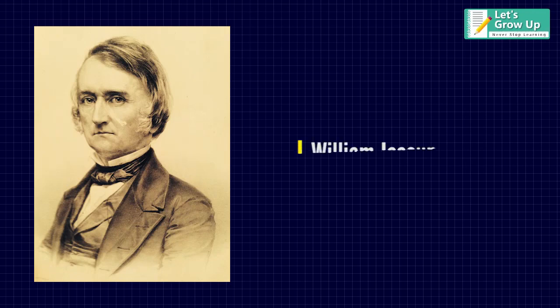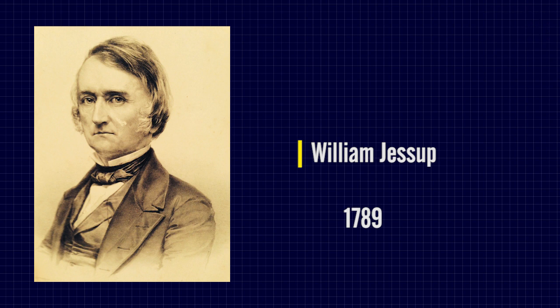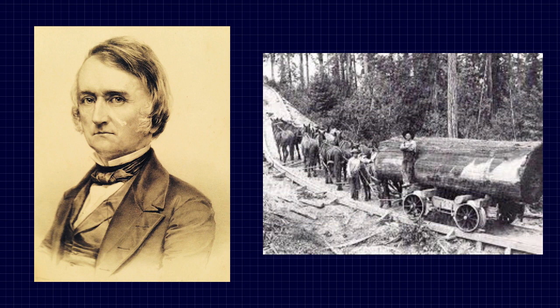In 1789, Englishman William Jessop designed the first wagons with flanged wheels that were grooved, allowing the wheels to better grip the rail. This important design feature was carried forward to later locomotives.